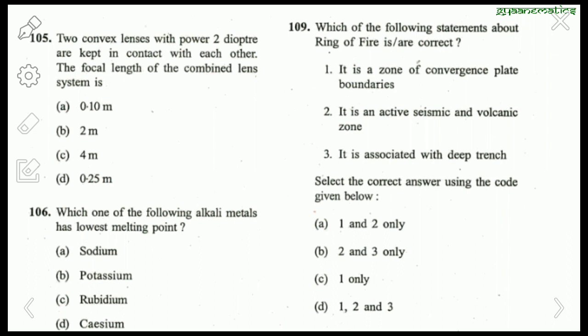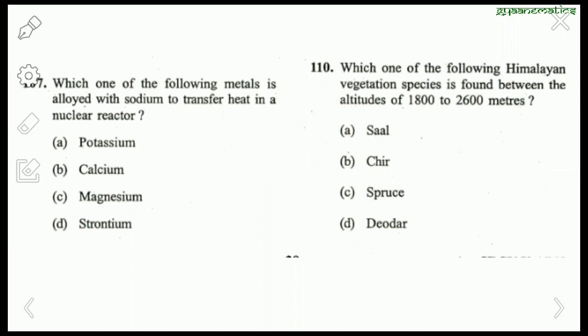Question 109: Which statements about the Ring of Fire are correct? It is present in the Pacific Ocean region. Statement 1 — it is a zone of convergent plate boundaries — correct. Statement 2 — it is an active seismic and volcanic zone — absolutely correct. Statement 3 — it is associated with deep trenches — also correct. So the right answer is 1, 2, and 3. Regarding nuclear reactors, sodium is alloyed with strontium to transfer heat. Deodhar is the Himalayan tree found between 1800 to 2600 meters altitude.